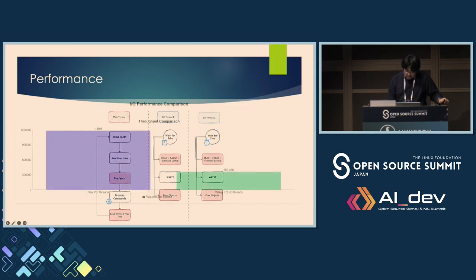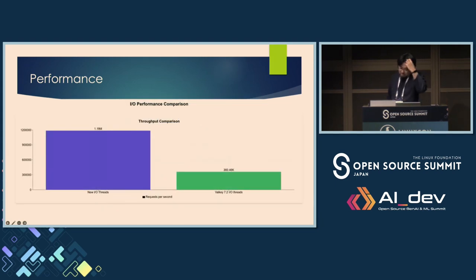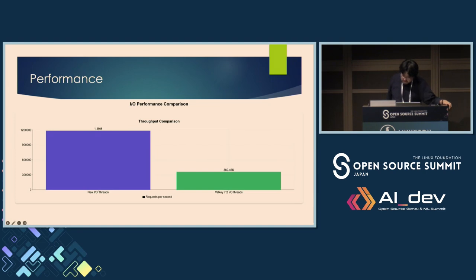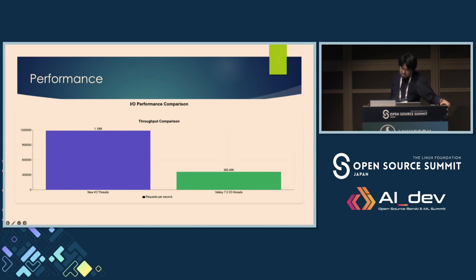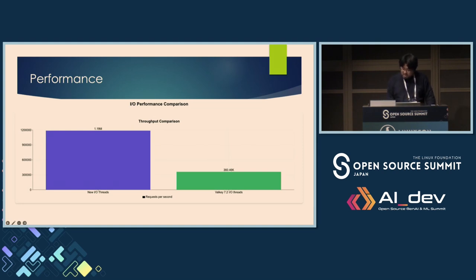There is concrete benchmark data confirming all these architecture improvements. The data speaks for itself — we can see nearly 2.5 times improvement in total throughput while maintaining or even reducing latencies. These aren't just incremental gains; they represent a fundamental advance in performance capabilities. What's particularly exciting is that our open source workflow committee has already identified several additional opportunities for performance optimizations, with multiple improvements planned for future releases. This is just for version 8.0.